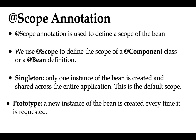In case of prototype scope, a new instance of the bean is created every time it is requested. It doesn't matter how many times you request the Spring bean — the container will create a new instance for each request. In contrast, with singleton scope only one instance is created and shared, so the application context returns the same instance every time.